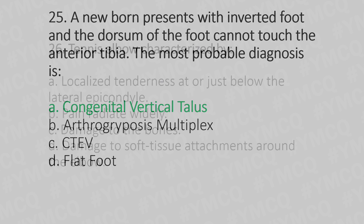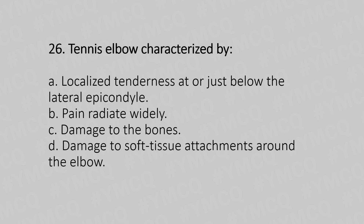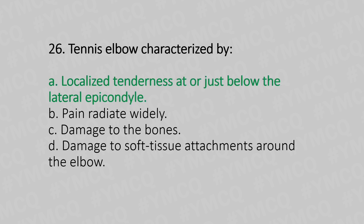Now let's move to question number 26. Tennis elbow is characterized by: Option A, localized tenderness at or just below the lateral epicondyle. Option B, pain radiates distally. Option C, damage to the bones. Option D, damage to soft tissue attachment around the elbow. And the answer is Option A, localized tenderness at or just below the lateral epicondyle.